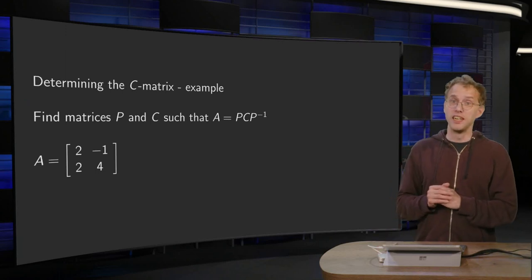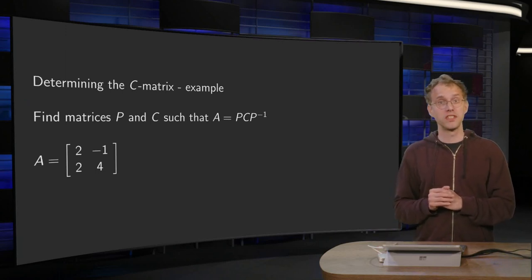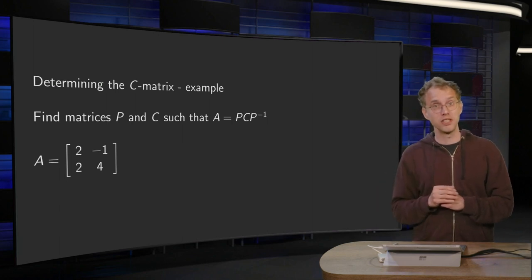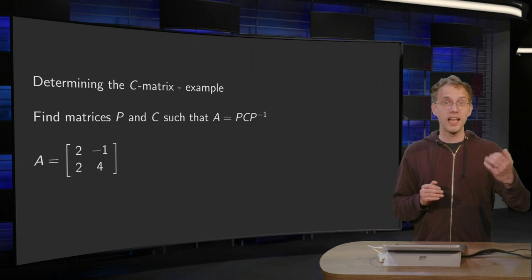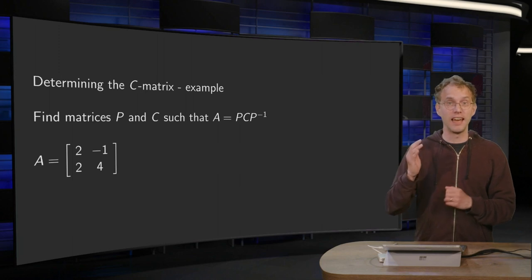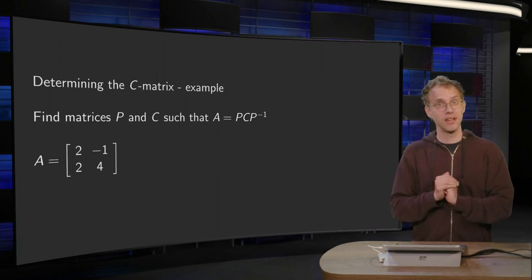We have seen that a real 2x2 matrix with complex eigenvalues is always similar to a scaling rotation matrix. In this video we will see an example where we will find this scaling rotation matrix in an explicit example. So let us take a look.